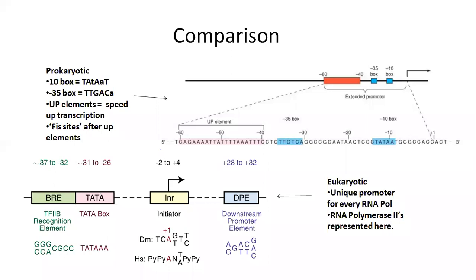In eukaryotic promoters, there are basically four elements. The first is the transcription factor binding recognition element. The second is the TATA box, which is very important because it provides precise attachment and is associated with housekeeping genes. There are also initiators and downstream promoter elements, for example at positions plus 28 and plus 32, meaning part of the promoter region extends downstream.